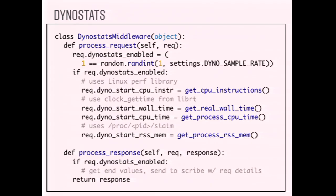Our primary performance data set is something we call Dynostats, gathered from a normal Django middleware. We sample a fairly small percentage of production requests. If Dynostats is enabled for a request, we measure CPU instruction count, wall time, CPU time, RSS memory usage of the process, and a number of other things. As the response goes out, we collect all those counters again to get the delta, and send that off to Scribe — Facebook's data and statistics pipeline — along with request metadata like URL path, view name, and HTTP response code.